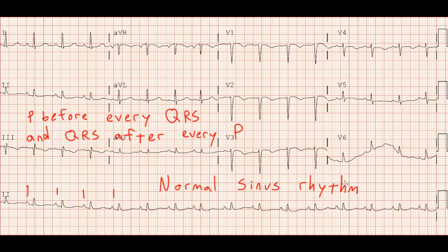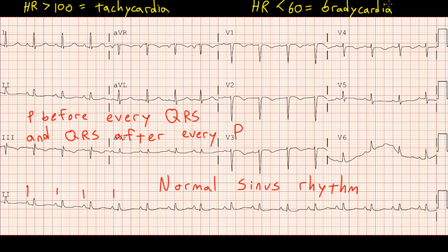If the rate was a little bit fast, let's say over 100 beats per minute, then we'd say we have sinus tachycardia. And if the rate was slow, let's say less than 60 beats per minute, then we'd say we have sinus bradycardia.